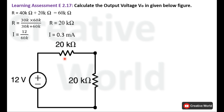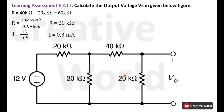This total current of 0.3 milliampere flows clockwise. Expanding the circuit, the total current flows into a node where it divides into two paths, shown by the green arrows. We are interested in only one of those branch currents.